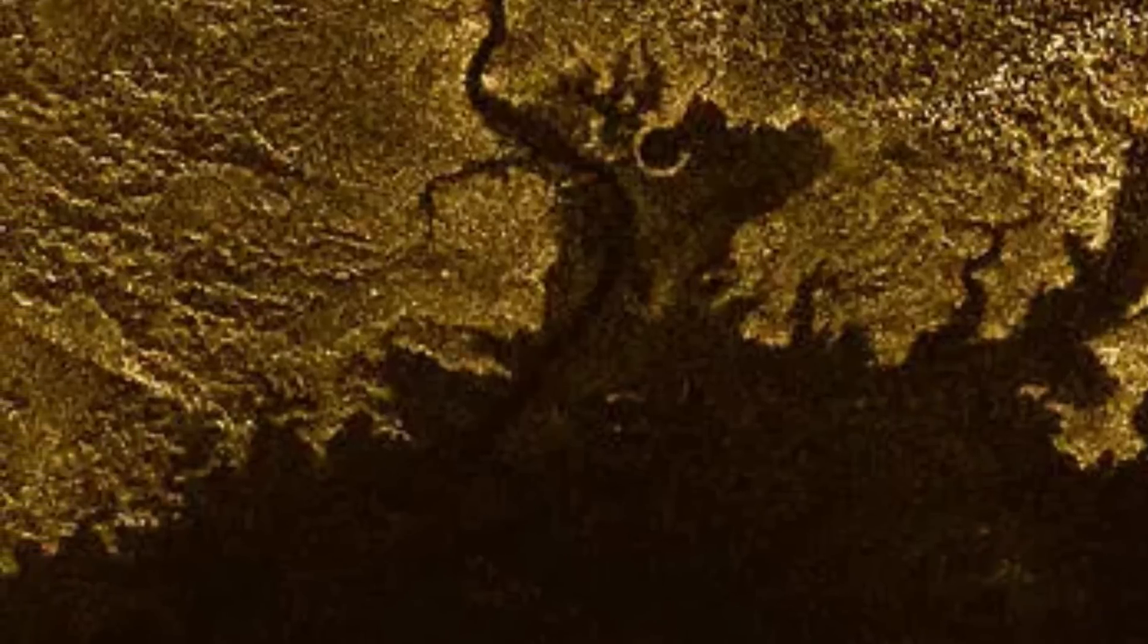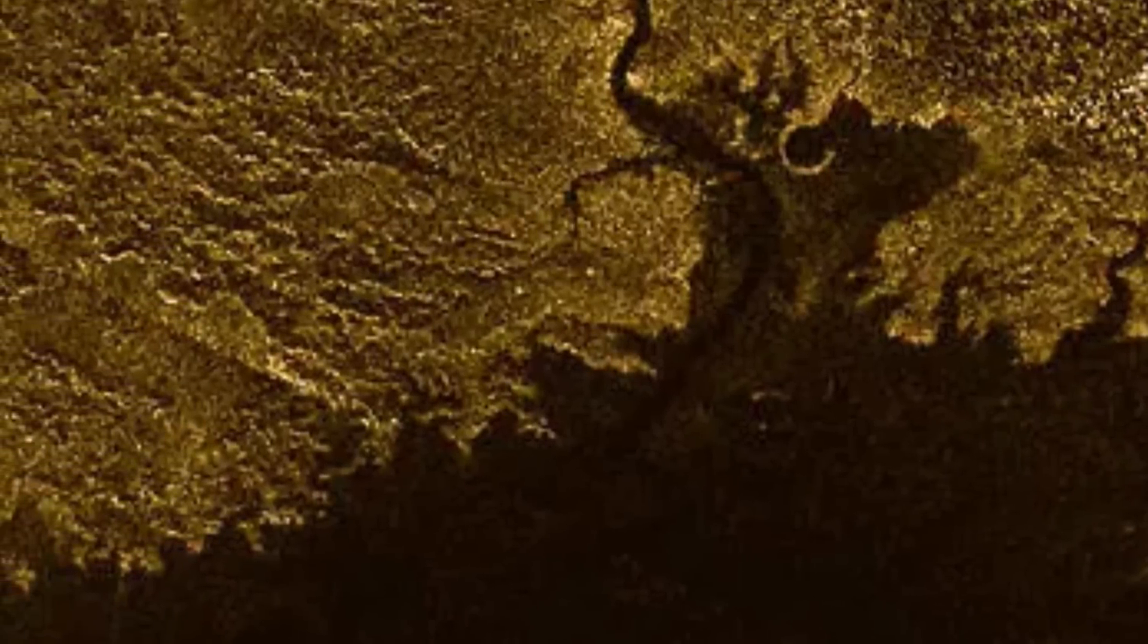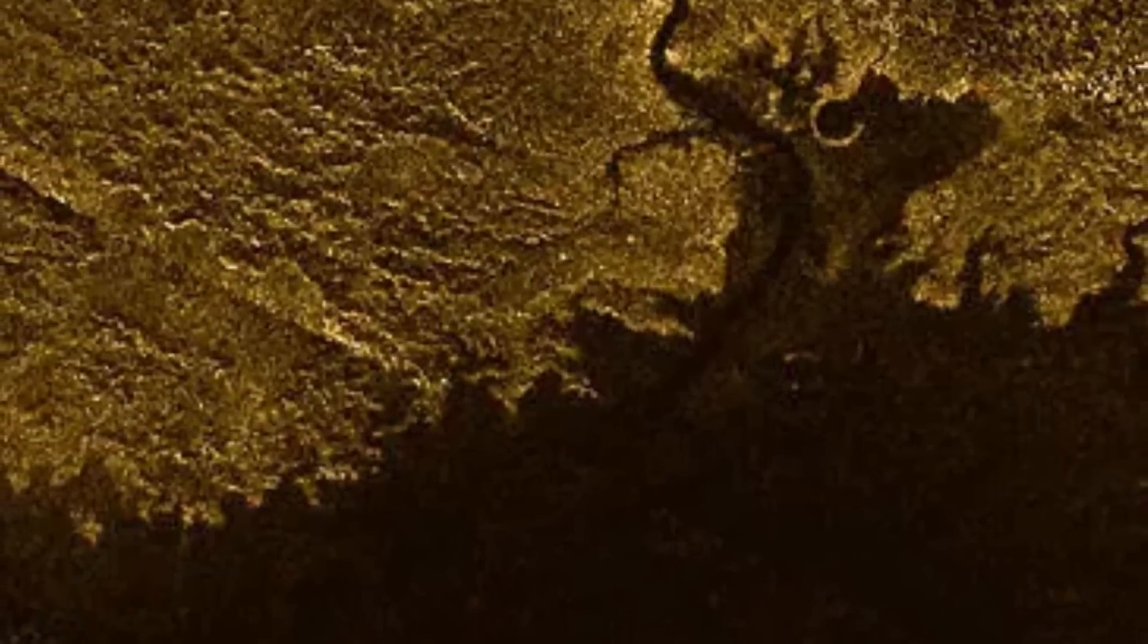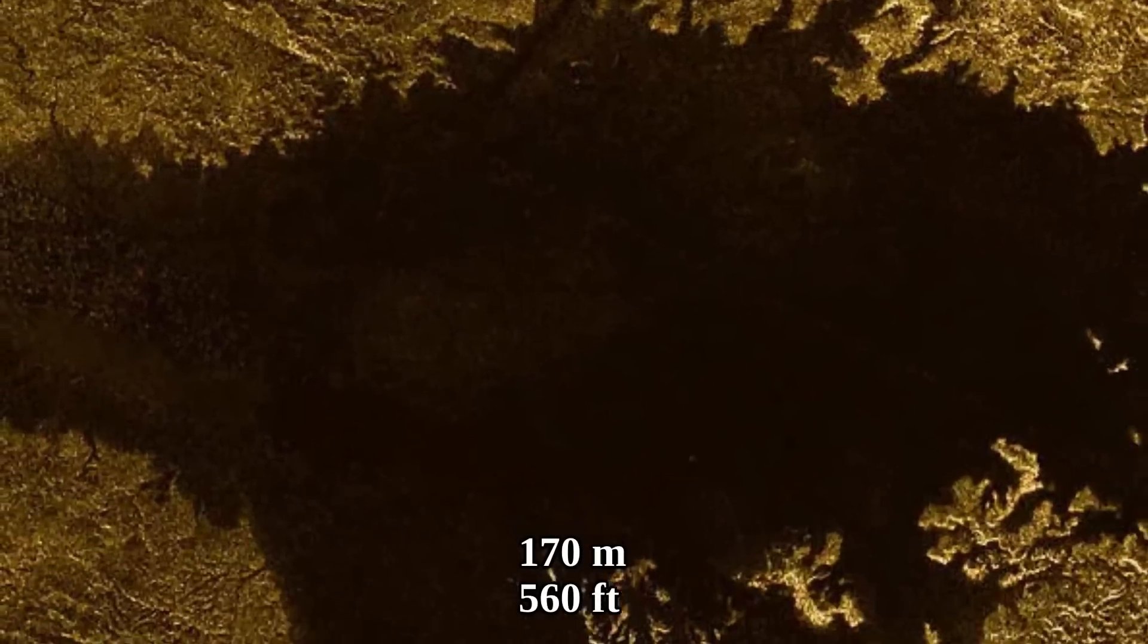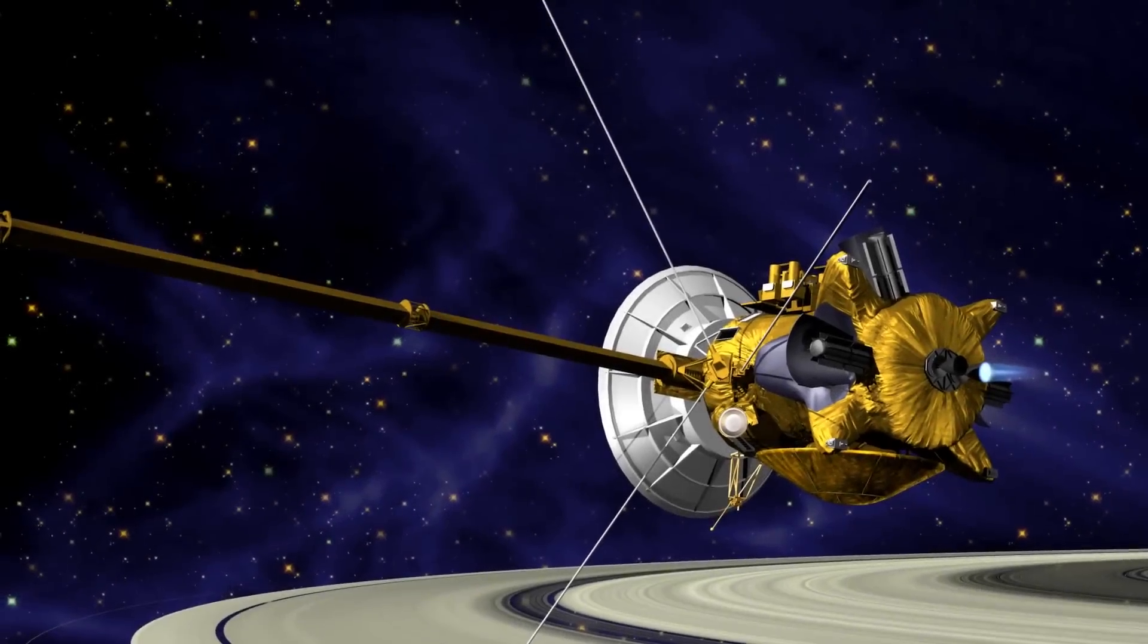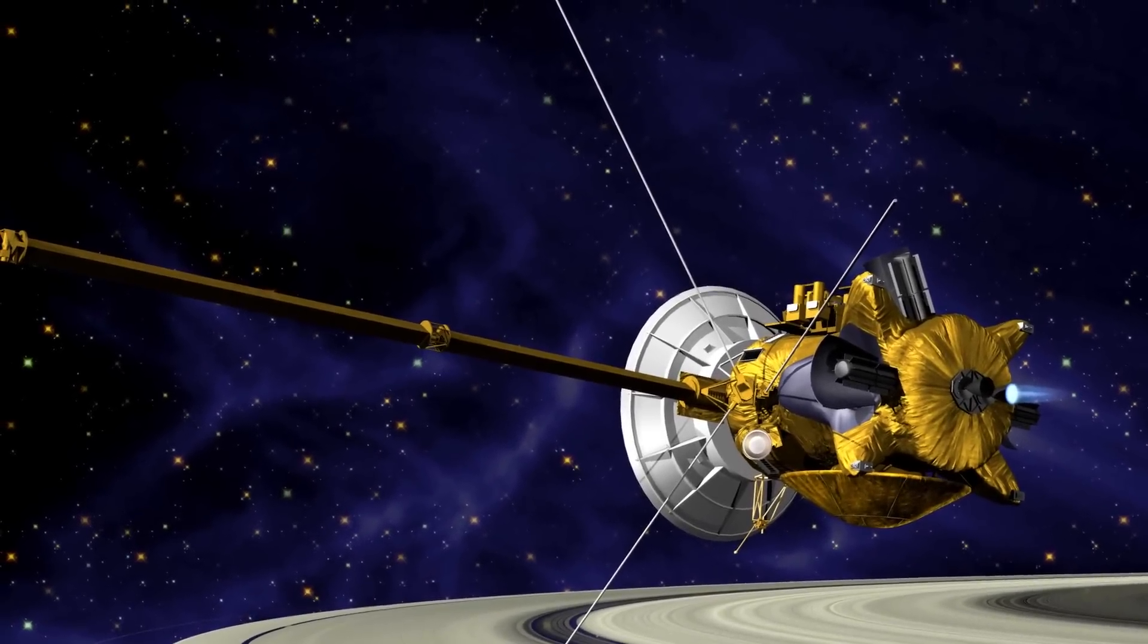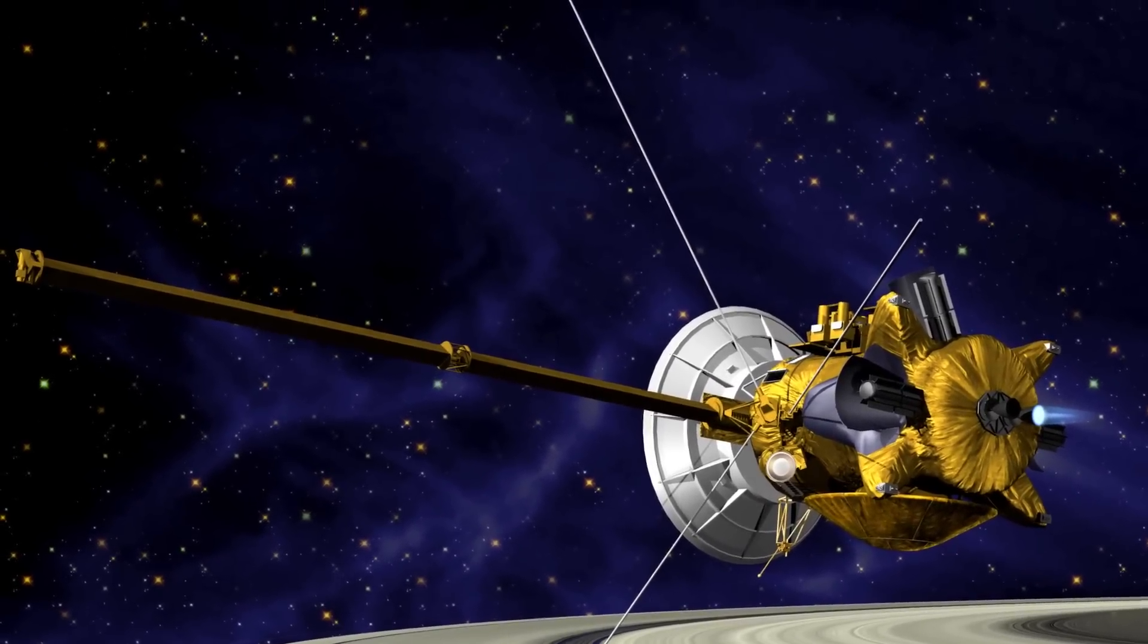That is why near the shoreline, in some areas, the lake bed of Ligeia is revealed. The maximum depth of the lake was also determined to be around 170 meters. Depth was determined through the amount of time that it took for the radio signal to get back to Cassini.